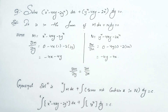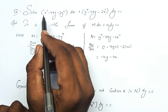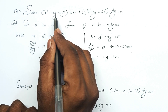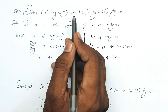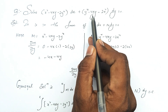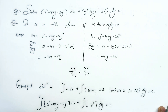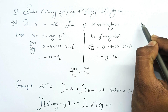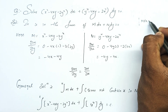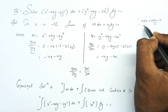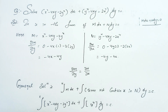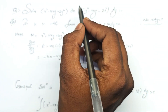So we will do class. Let's take a question: Solve (x² - 4xy - 2y²)dx + (y² - 4xy - 2x²)dy = 0. In the previous class, the exact differential equation is in the form M dx + N dy = 0. The exact differential equation condition will form a little bit.